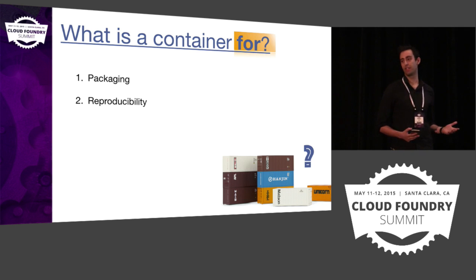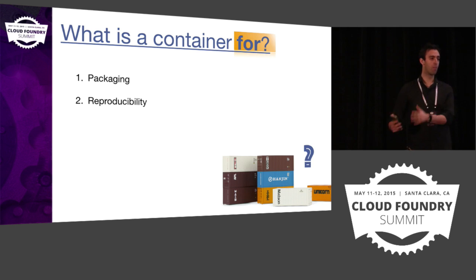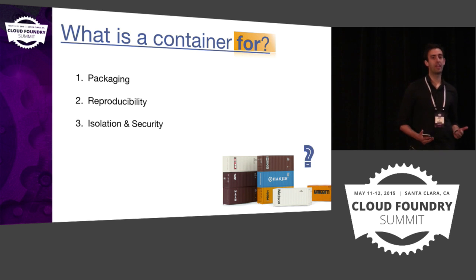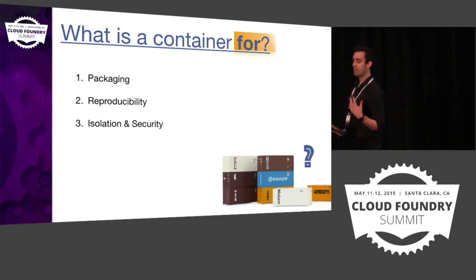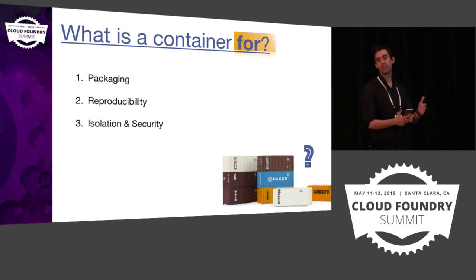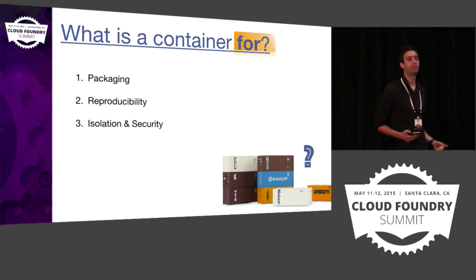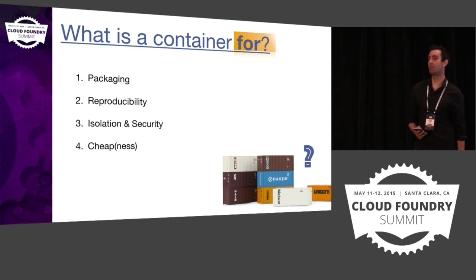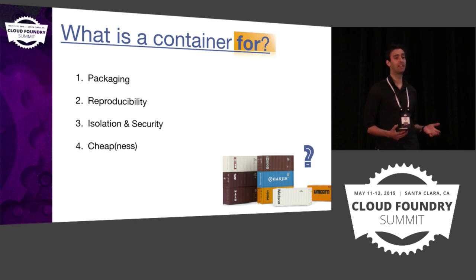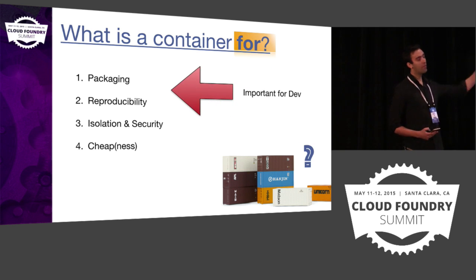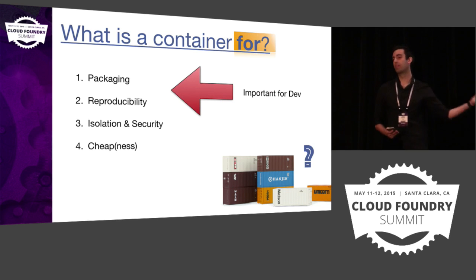The second one is reproducibility — I'm going to run my thing locally, run it remotely, and it's going to work in the same way. Thirdly, super important, isolation security: if I'm running lots of containers on a particular machine, I want to make sure each one is isolated so applications don't interfere with each other. And the fourth one is cheapness — we can run loads, we get the density.